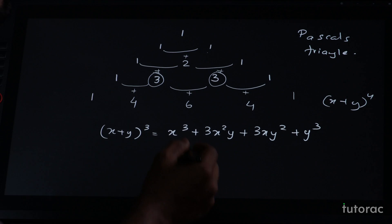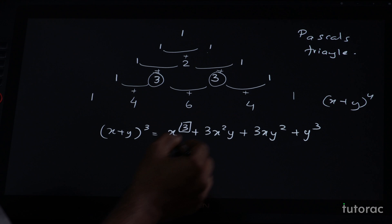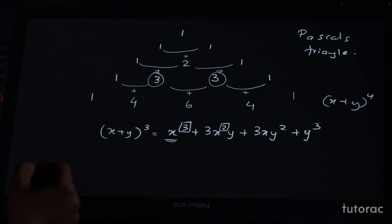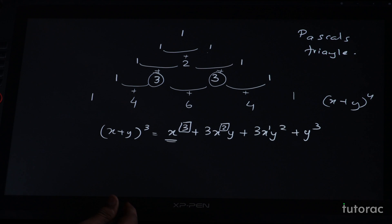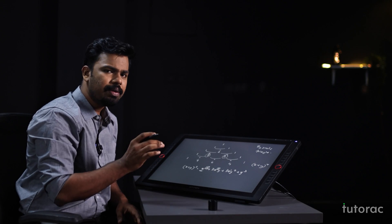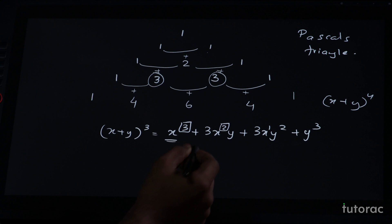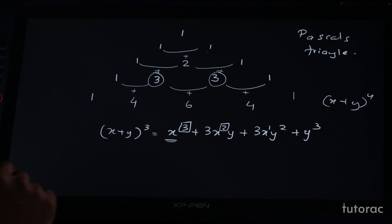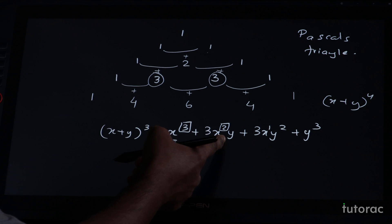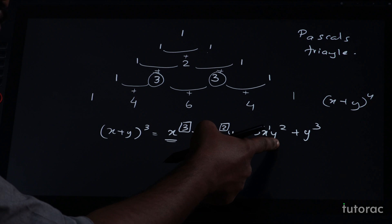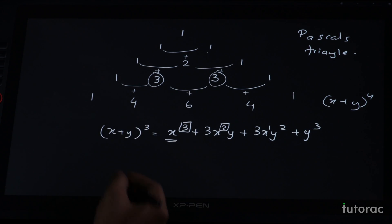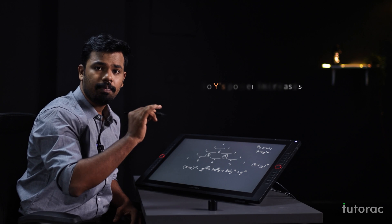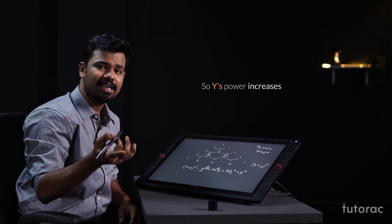There are coefficients, but there are some other important things we should remember. Look at the power of x — it is 3, then 2, then 1, and in the last term there is no x. So the power of x is decreasing. And what happens to the power of y? There is no y in the first term, so the power is 0. Then y raise to 1, then y square with power 2, then y cube with power 3. So y power increases and x power decreases.